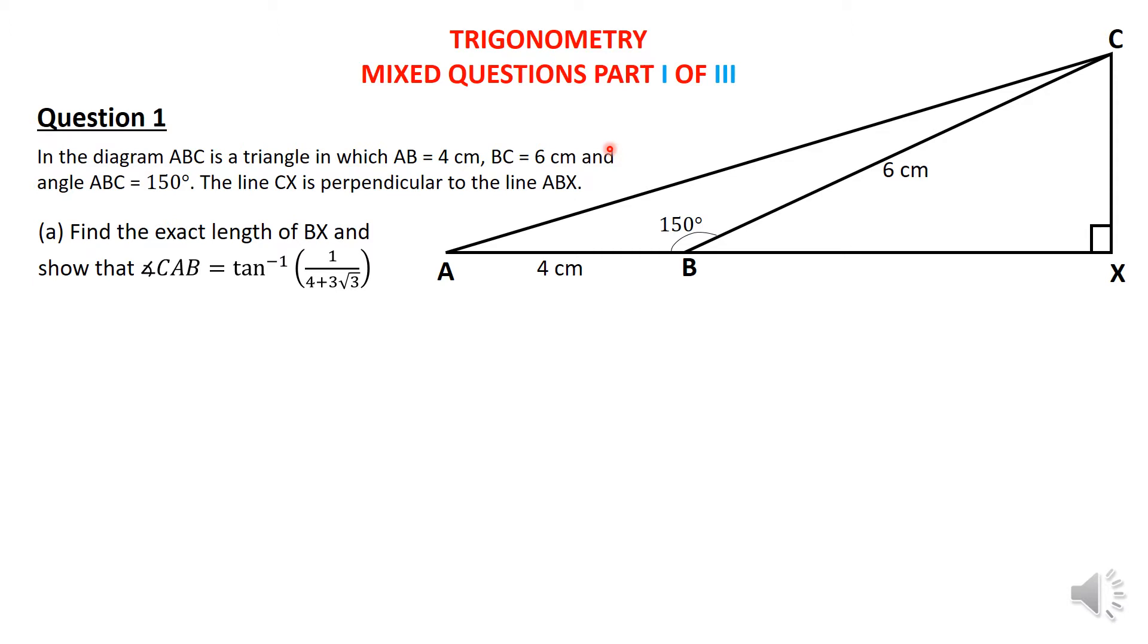So here you have a diagram and it's a right angle triangle, triangle ACX. And then also you have triangle BCX, also a right angle triangle. And AB is equal to 4 centimeters and BC is equal to 6 centimeters. And then the angle ABC is 150 degrees. They are saying the line CX is perpendicular, meaning that makes 90 degrees, to the line ABX. Therefore, it's a right angle triangle. Come to think about it, it's about two of them, one just on top of the other.